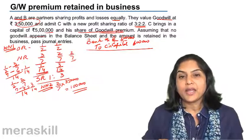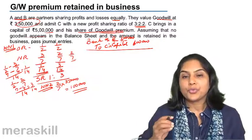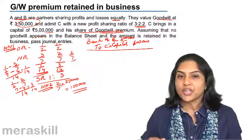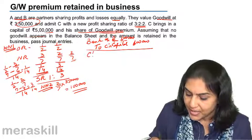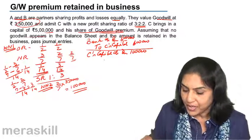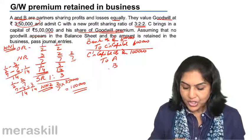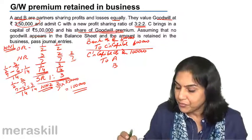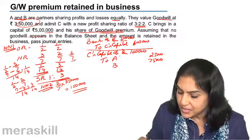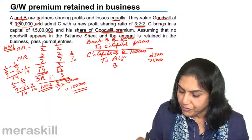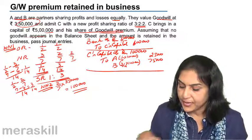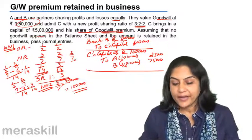Next, A and B need to be compensated with the goodwill premium brought in by C. This has to be credited to the capital accounts of A and B in the sacrificing ratio. So the entry is: C's capital account debit 1 lakh, to A's capital and B's capital in the ratio 1:3 — that is 25,000 to A and 75,000 to B.